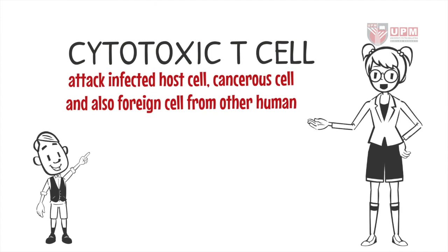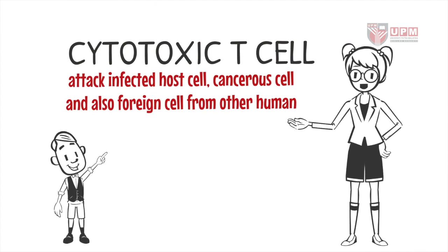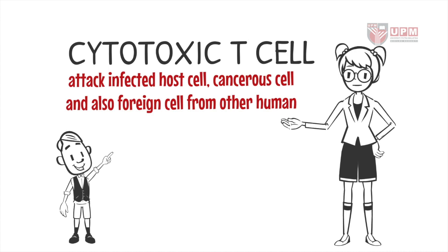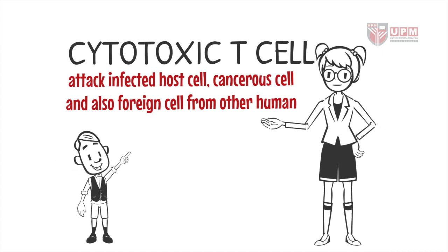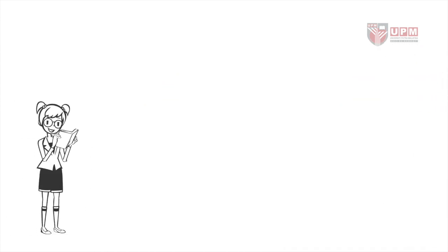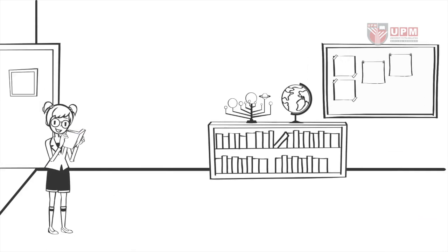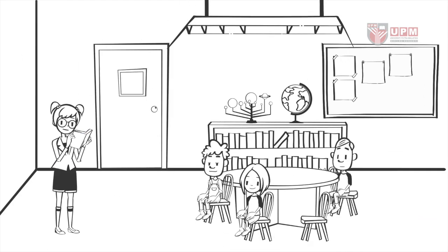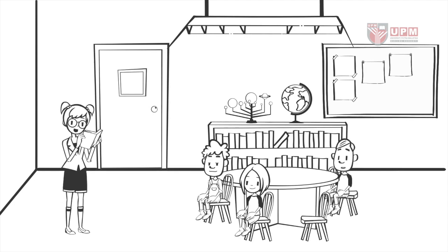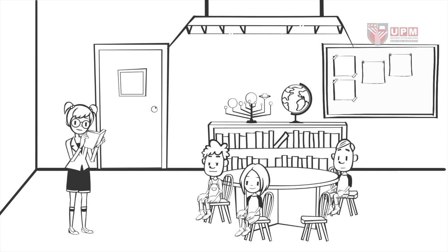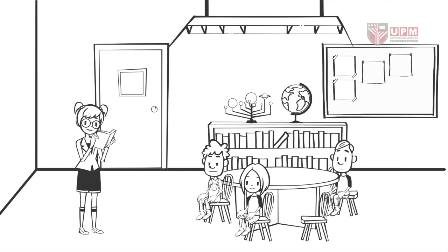Regulatory T cells serve to regulate other cells to prevent excessive inflammation or autoimmunity. Cytotoxic T cells also have their own function, which is to attack infected host cells, cancerous cells, and foreign cells from other humans and animals.